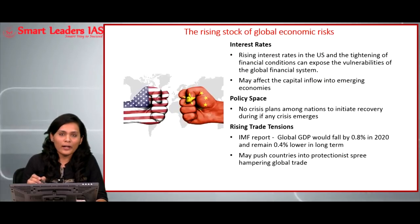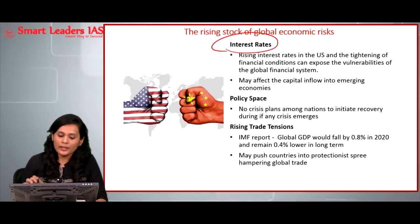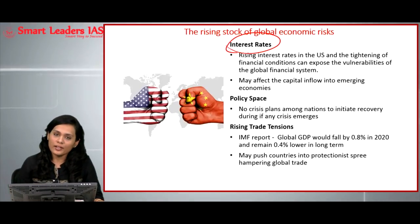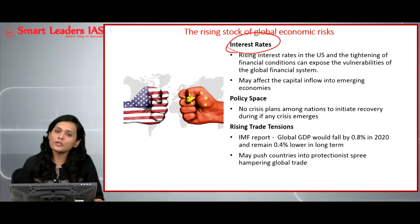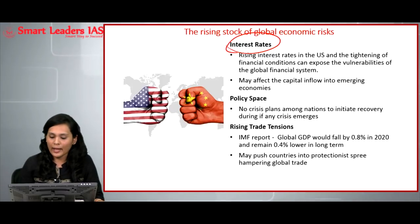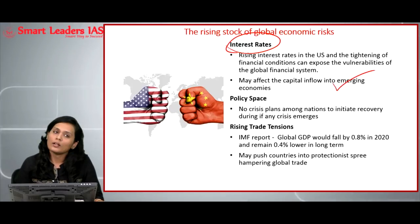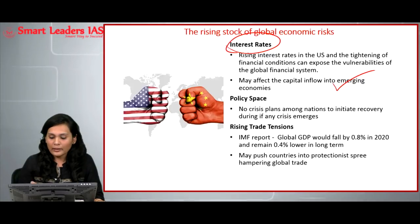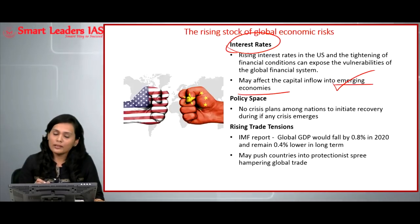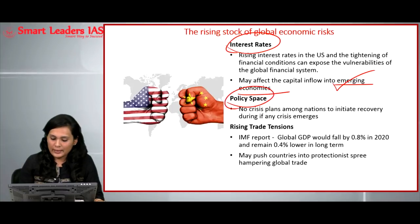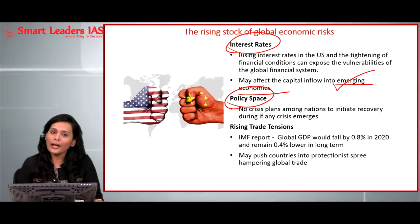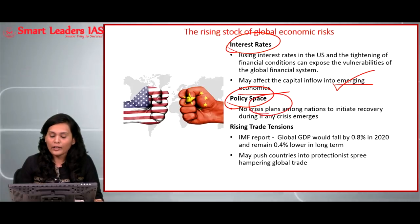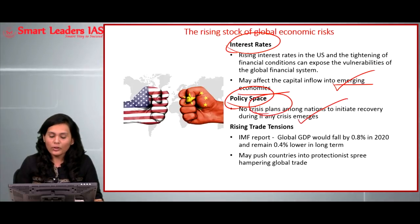Looking at specific factors in more detail: number one is the interest rate. The hike in interest rate in the USA indicates a recovery of the US market from the global slowdown, which will make investors prefer the US market over other emerging economies. This will have a considerable impact on the markets of emerging economies including India. The second factor is the policy space — most developing as well as developed countries do not have any significant crisis plan to face a risk condition.